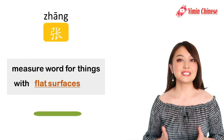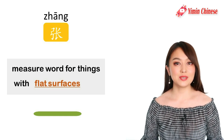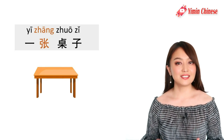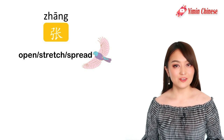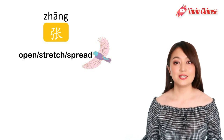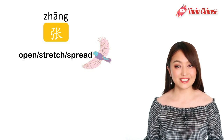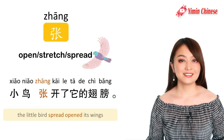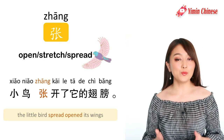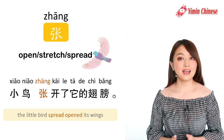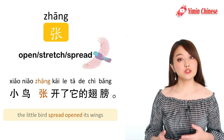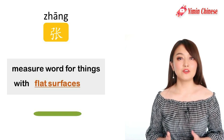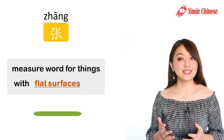The next measure word is 张 (zhāng). It's the measure word for objects with a flat surface, like 一张桌子, a table or a desk. 张 itself is a verb — it means to open, to spread, to stretch. For example, 小鸟张开了他的翅膀 — the little bird spread open its wings. That's why 张 is chosen as a measure word for objects with a flat, spread surface.